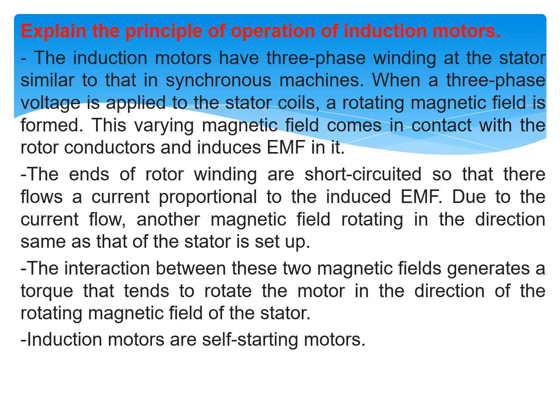Explain the principle of operation of induction motors. Induction motors have three-phase windings at the stator, similar to synchronous machines. When a three-phase voltage is applied to the stator coils, a rotating magnetic field is formed. This varying magnetic field comes in contact with the rotor conductors and induces an EMF into them. The ends of rotor windings are short-circuited so that a current proportional to the induced EMF flows, creating another magnetic field rotating in the direction of the stator field. The interaction between these two magnetic fields generates a torque that rotates the motor in the direction of the stator's rotating magnetic field. Induction motors are self-starting motors.